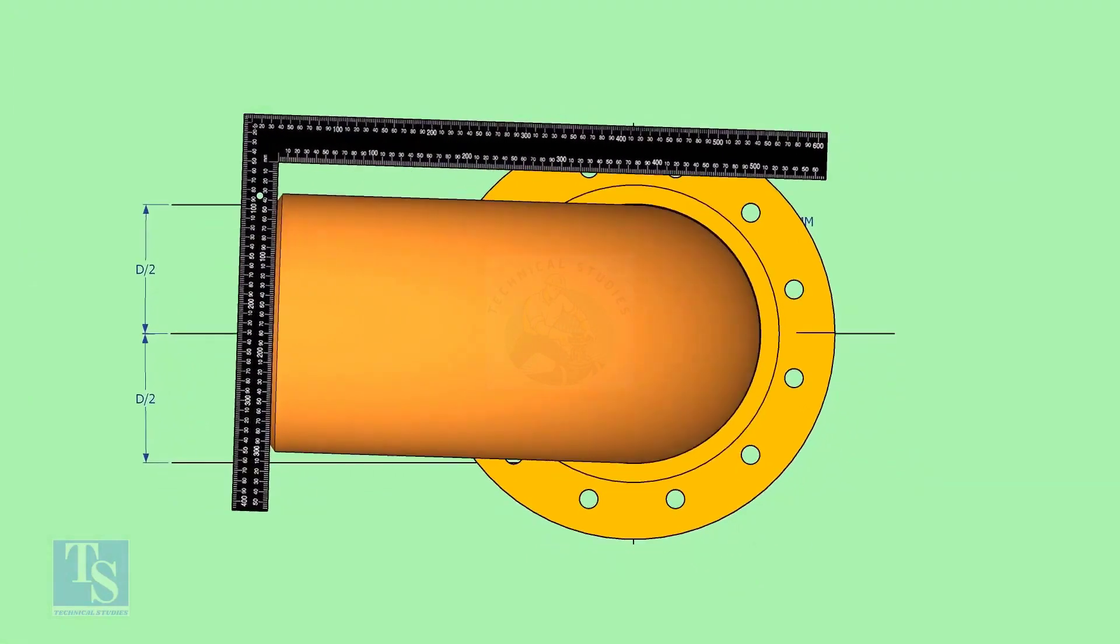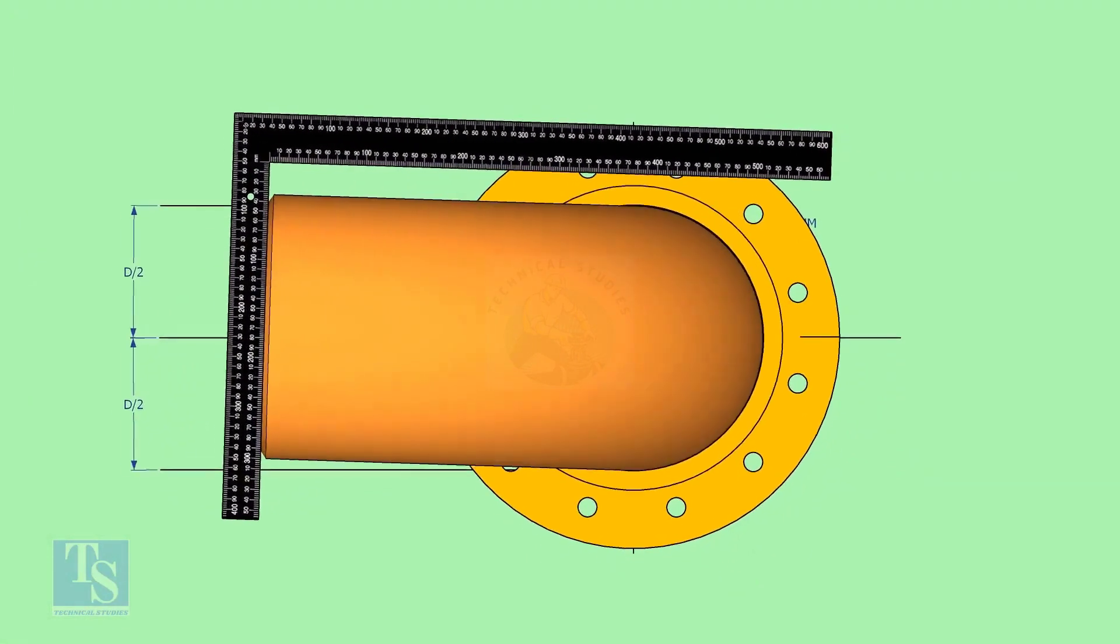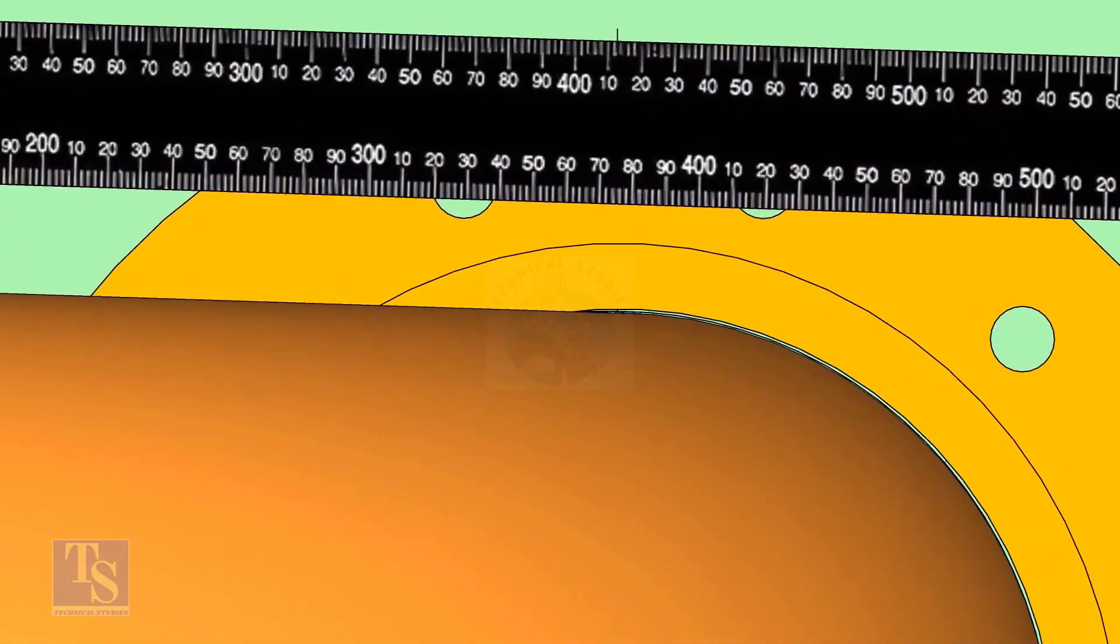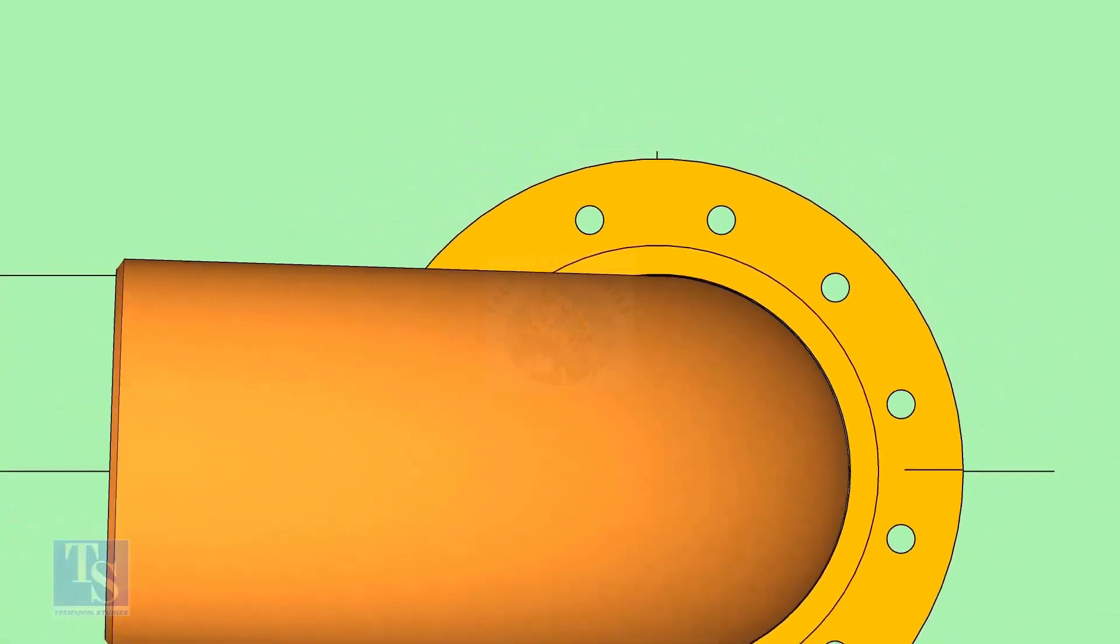Hold a right angle as shown and check if the reducer is turned. In this case, the elbow centerline is not parallel with the centerline of the flange.